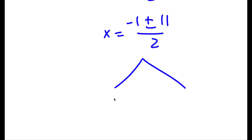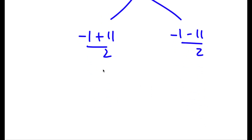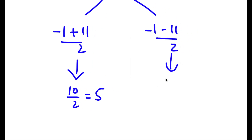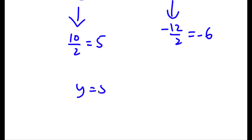So this gives me two expressions. I have negative 1 plus 11 over 2, and I have negative 1 minus 11 over 2. Negative 1 plus 11 over 2 is equal to 10 over 2, which is equal to 5. Negative 1 minus 11 over 2 equals negative 12 over 2, which is equal to negative 6. So my two values are y equals 5 and y equals negative 6.